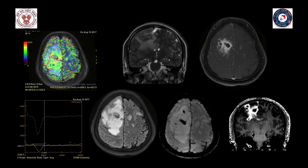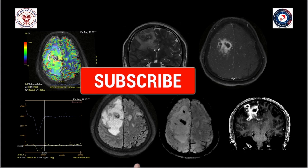However, upon craniotomy the surgeon found frank pus — this was a cerebral abscess. This is a pitfall of DSC perfusion: cerebral abscesses can show spuriously high perfusion values due to reactive angiogenesis in the adjacent brain parenchyma. Retrospectively, fluid-debris levels were visible in some of these lesions. Sometimes diagnosis is quite difficult to make prospectively even with adjunctive techniques like perfusion-weighted imaging.